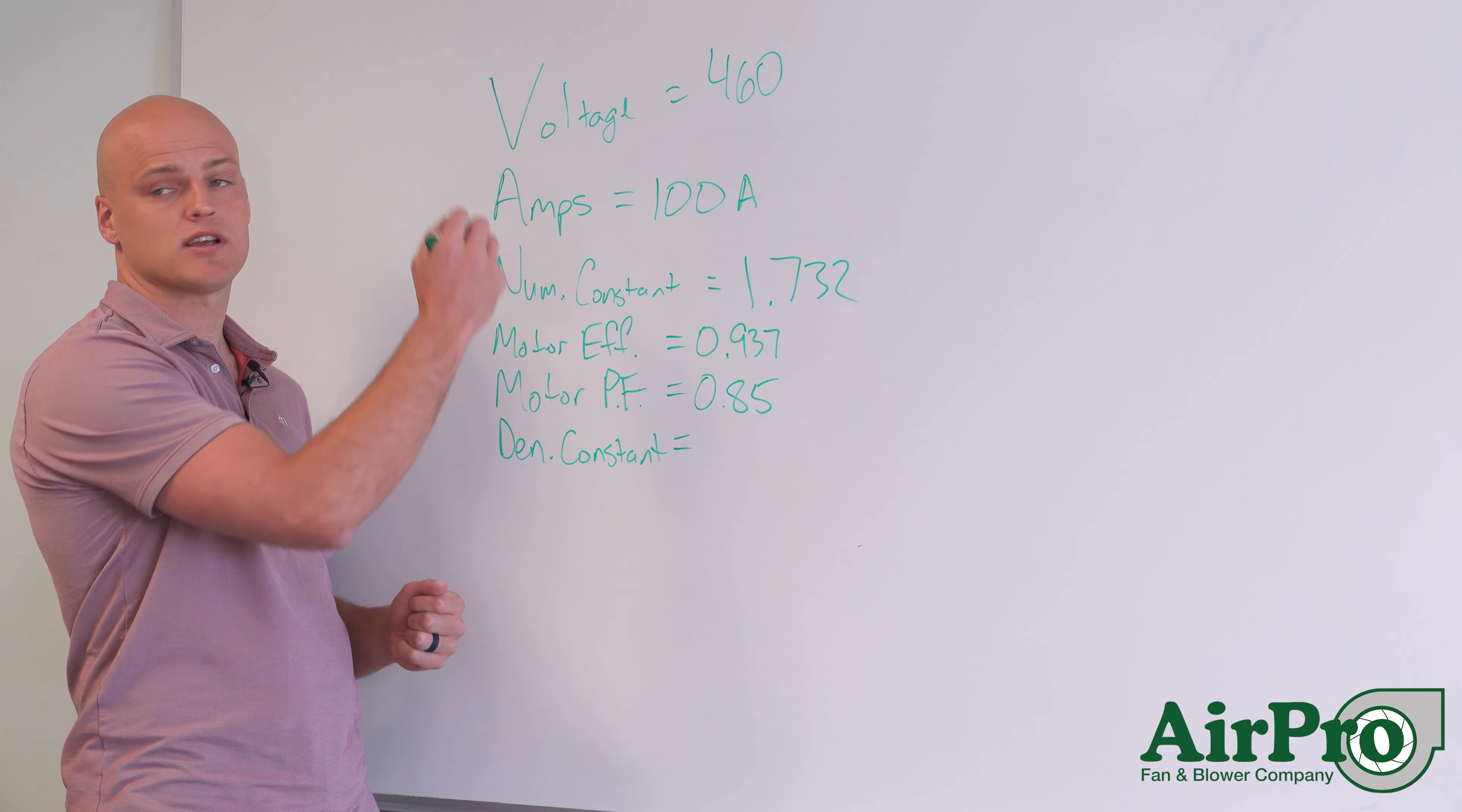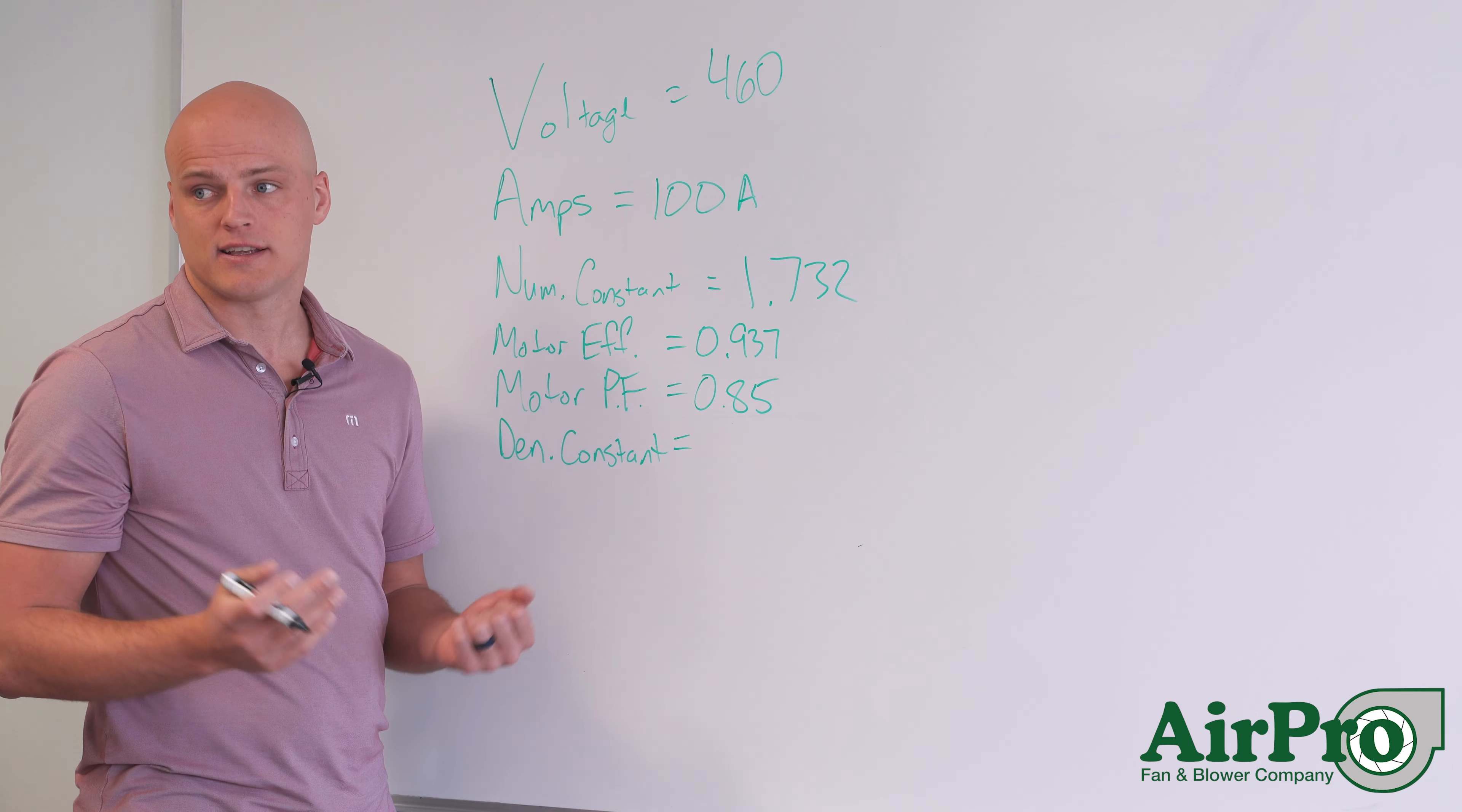And for this example, we're going to use 0.85 for a motor power factor. And then the denominator constant, again, for voltage and amps, is always going to be 746.